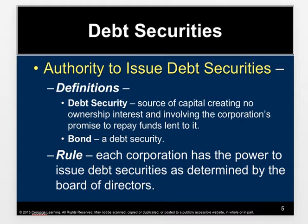The creditor has a claim for the amount of the debt — the money lent to the firm — but there's no ownership interest, so they do not participate in the decision-making process. They have no control, but they do get paid back first. That is the trade-off: control versus more likely to be paid. Shareholders do not have to be paid back; debt holders do, unless the corporation is bankrupt. Each corporation has the power to issue debt securities as determined by the board of directors.